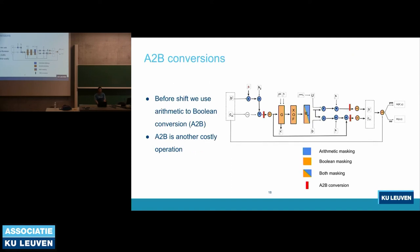The last component required to mask the whole Saber decapsulation algorithm is arithmetic-to-Boolean (A2B) conversion. After the subtraction — where everything is arithmetically masked — we need Boolean masked values for the SHIFT operations, since those are easier. This same pattern occurs in multiple places. We need this A2B component in three places, so we worked to make it faster.